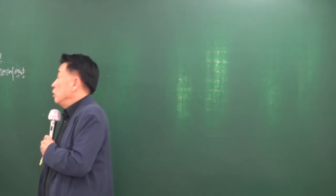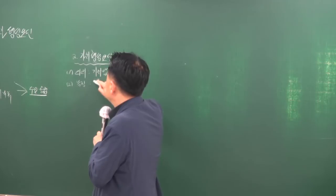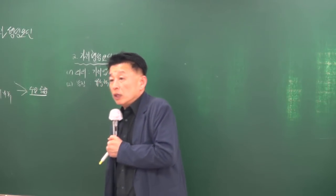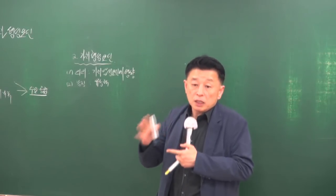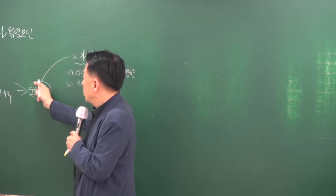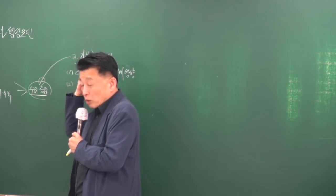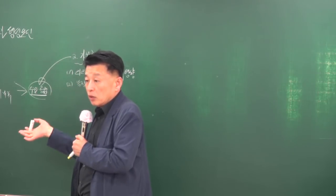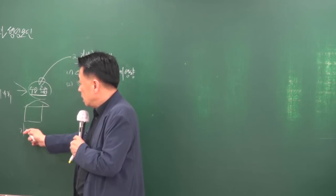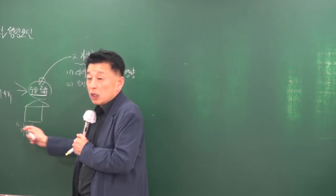가치형성요인의 특징 중 하나는 유동적이라는 것, 즉 계속 변한다는 것입니다. 계속 변하면 수요와 공급에 변화를 주고, 수요와 공급이 변하면 가격이 달라집니다. 그래서 부동산 가치를 추계할 때 항상 기준 시점을 정해놓고 이를 기준으로 가치를 추계해야 합니다.